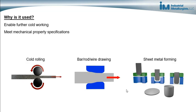So why is it used? First of all, it might be used to enable further cold working. At steel mills, aluminum mills, or copper and brass mills — any mill that makes any type of metal — they use cold rolling and cold drawing for bar, rod, wire, or tubing to reduce the metal's thickness and change its size and shape. During cold working, the metal's strength increases and ductility decreases, so it may be necessary to anneal the material to restore ductility and continue cold working.